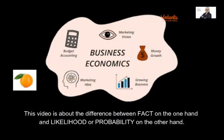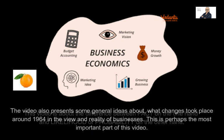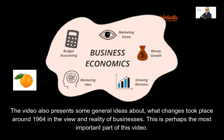This video is about the difference between fact on the one hand and likelihood or probability on the other hand. The video also presents some general ideas about what changes took place around 1964 and the view and reality of businesses. This is perhaps the most important part of this video.